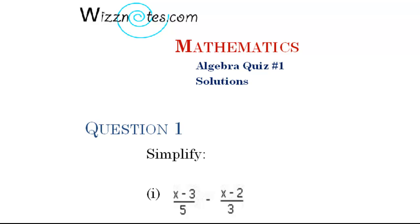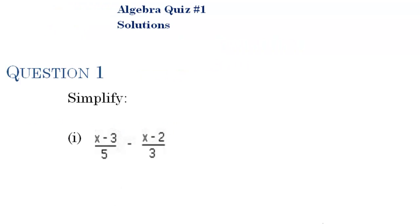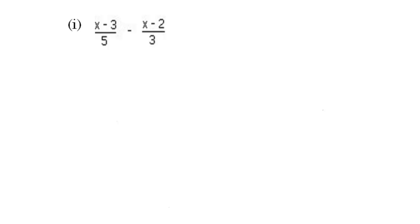Question 1. Simplify x minus 3 over 5 minus x minus 2 over 3. The first thing we have to do is find the LCM of the two denominators. The LCM is the lowest number that can be divided by both 3 and 5 without leaving a remainder, and that number is 15.